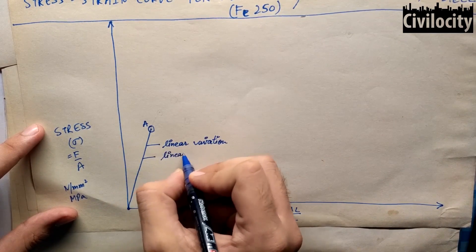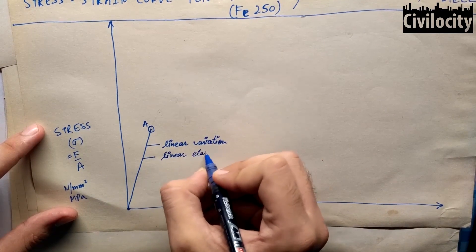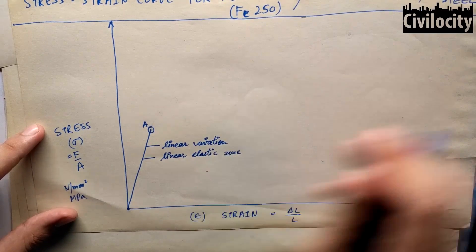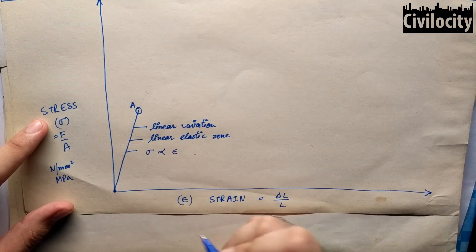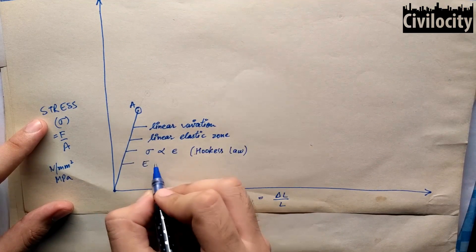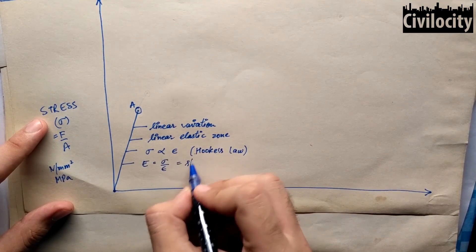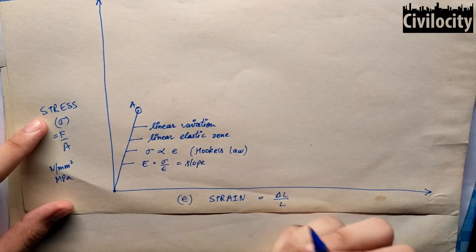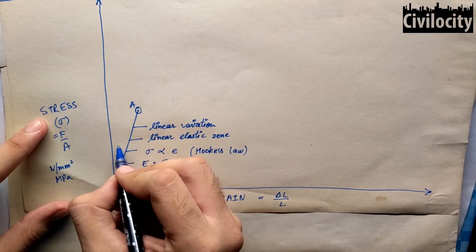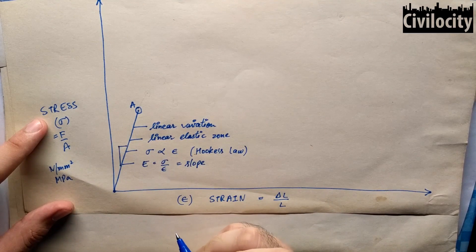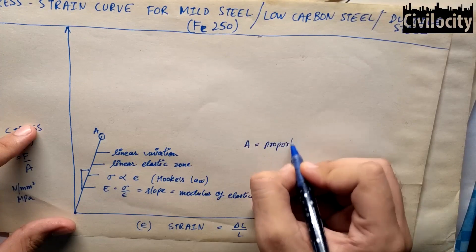Why is this zone called the linear elastic zone? Because in this region Hooke's law is valid. Hooke's law states that stress is directly proportional to strain which includes a constant of proportionality E which equals stress divided by strain and can be said as the slope of this linear curve. This E is known as modulus of elasticity. Since stress is proportional to strain only up to point A, this point A is called the proportionality limit.